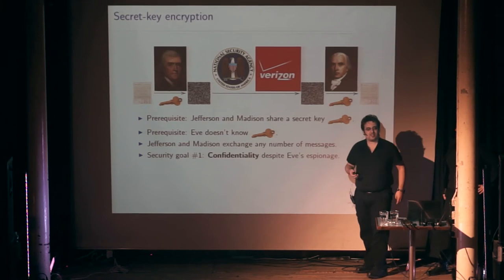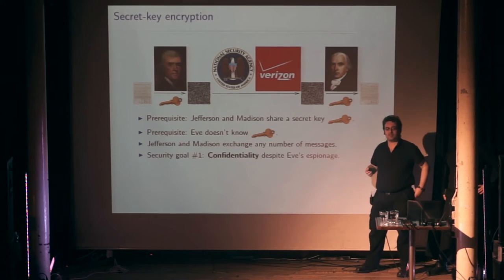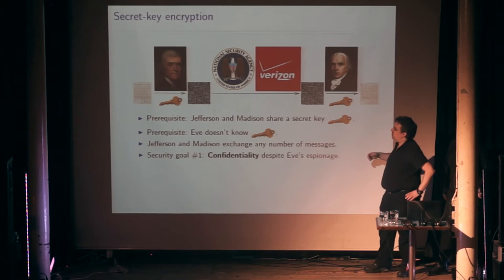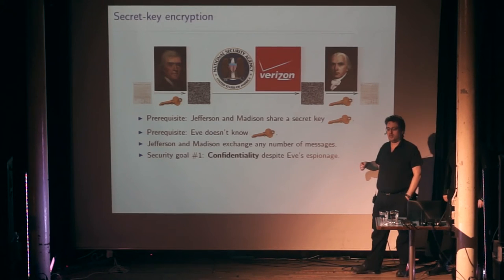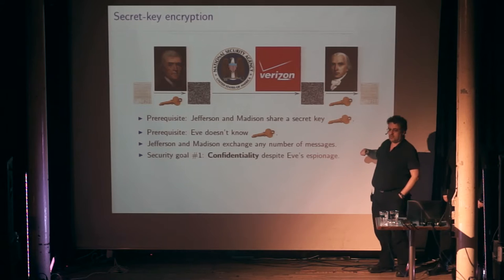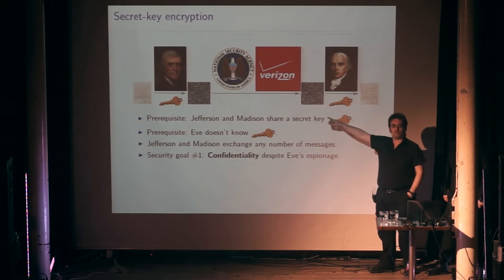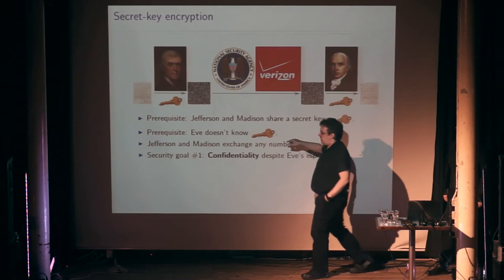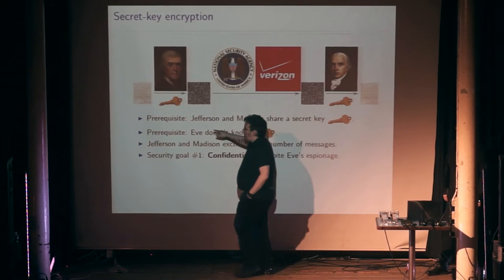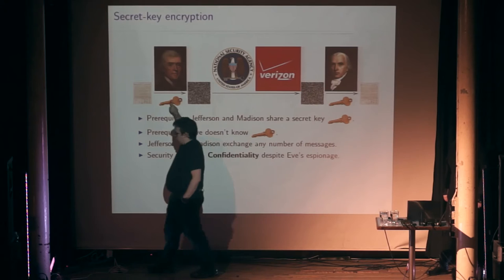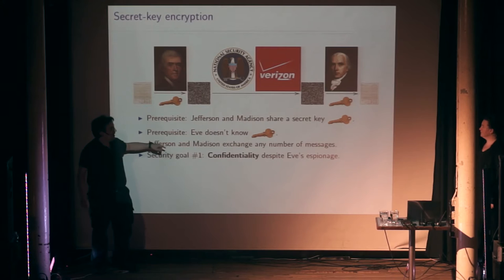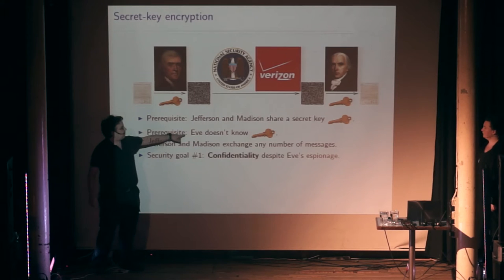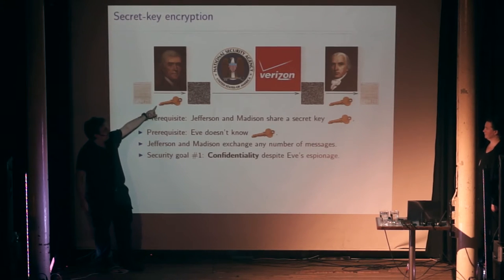So what's going on inside this stuff? One example of what we do in cryptography is secret key encryption. Saying 'secret key' means that Jefferson and Madison on both ends of this communication know some secret which they're not showing anybody. The eavesdropper — that's EVE, that's NSA and Verizon — doesn't know the secret key. Only Jefferson and Madison know it.